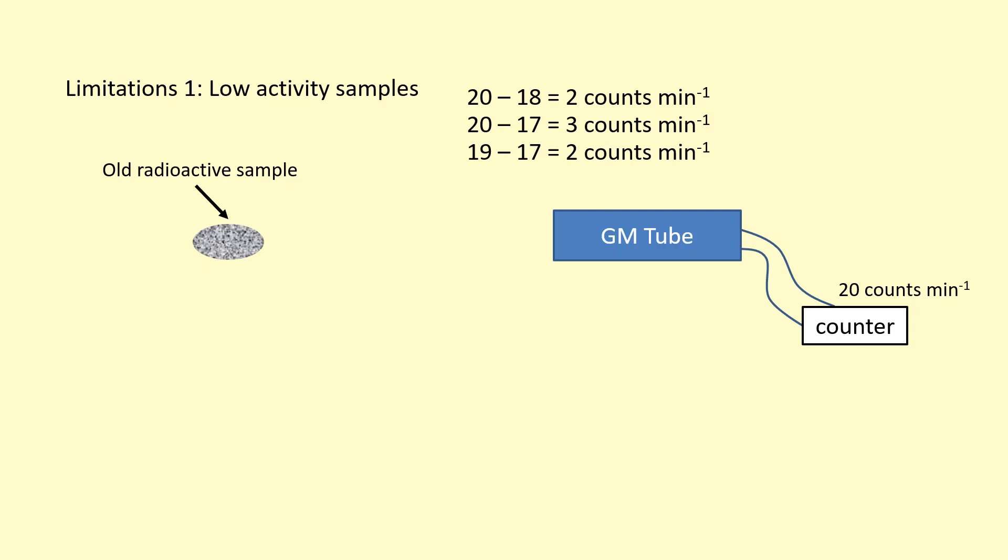So the only way to reduce this random error is to measure the radioactivity over a longer period of time and then average out.